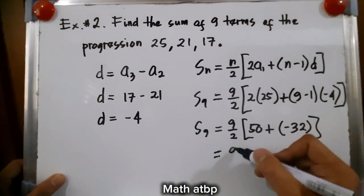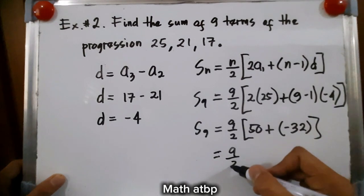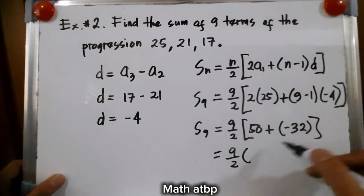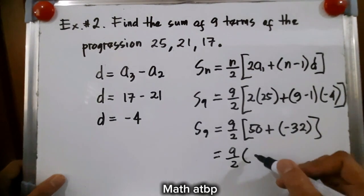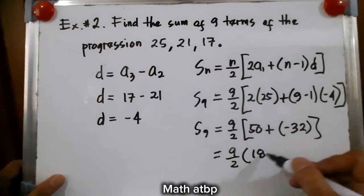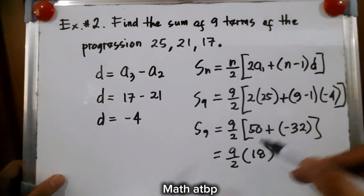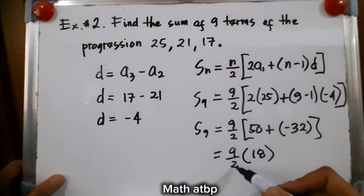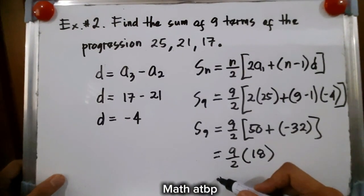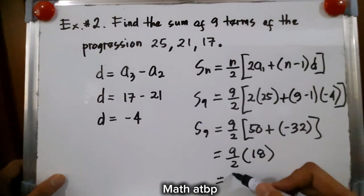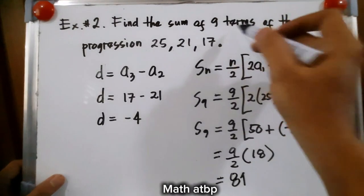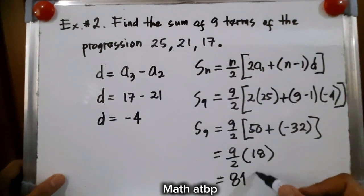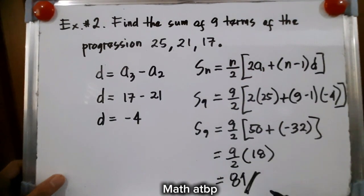So we have 9 over 2 times 50 plus negative 32, which is positive 18. Then 18 divided by 2 is 9, and 9 times 9 is 81. So the sum of 9 terms is 81.